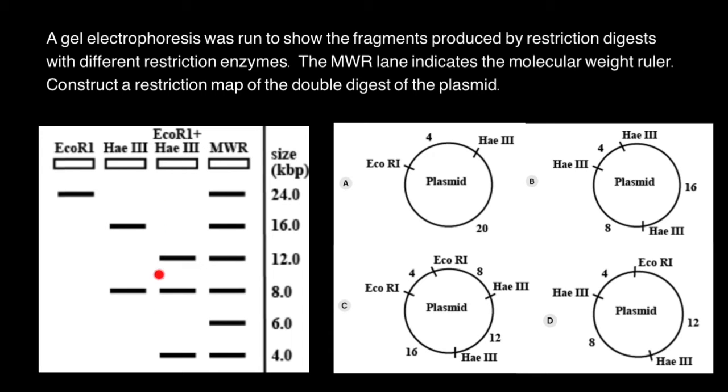And when we cut plasmid with two restriction enzymes, we are going to get three cuts: two by one enzyme and one cut by another enzyme. So we are going to get three bands.